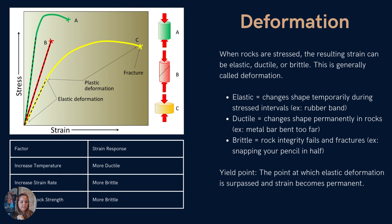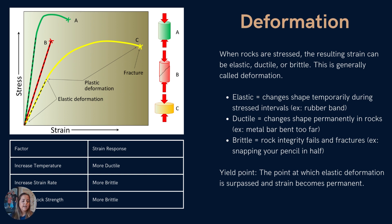When rocks are stressed, they react in one way or another depending on their condition and strength. This deformation caused by stress is called strain, and depending on the factors, you'll see a different response. It's either going to react in an elastic manner, a ductile manner, or a brittle manner. An elastic manner is when something changes shape temporarily — like a rubber band that always goes back to its original shape. Some rocks will do this, especially if the stress they experience is temporary and not a prolonged event.